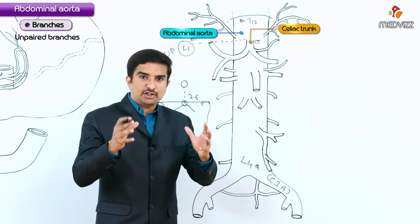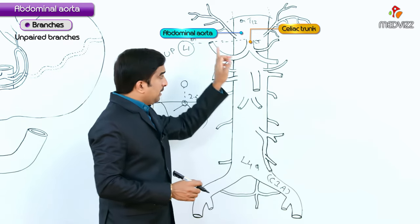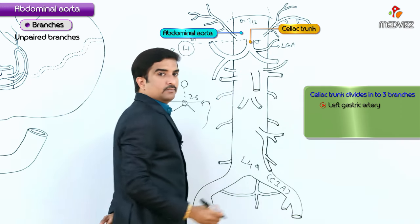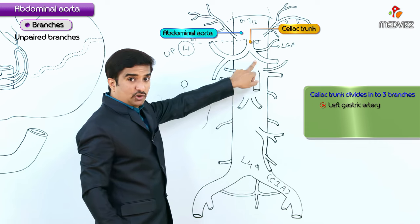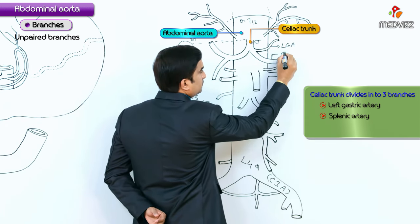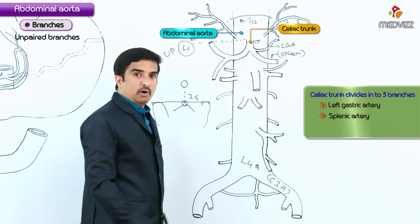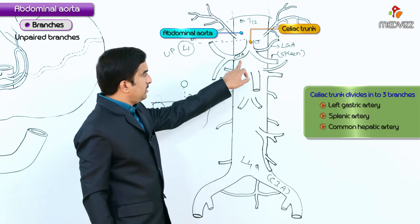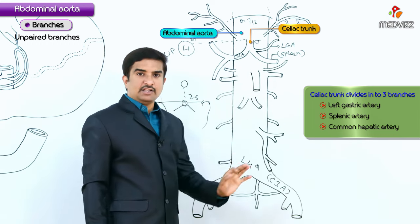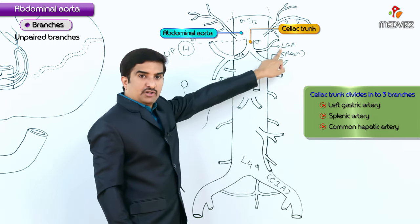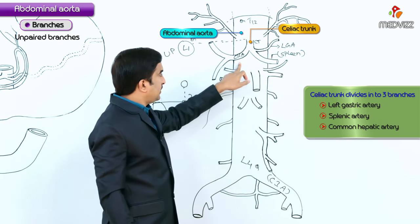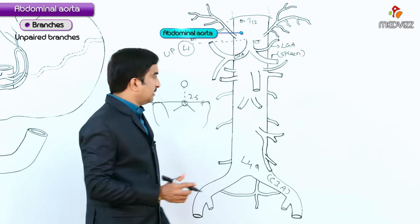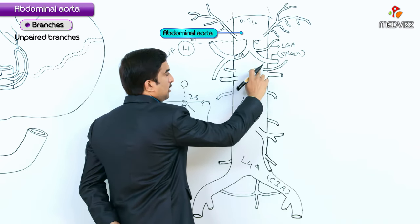Immediately after arising from the anterior aspect of the abdominal aorta, the celiac trunk divides into three branches: the left gastric artery, the splenic artery — which is one of the largest branches supplying the spleen — and the common hepatic artery. These are the three branches arising from the celiac trunk.